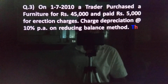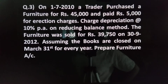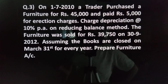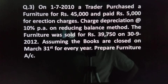Next problem, question number 2. On 1-7-2010 a trader purchased furniture for Rs.45,000 plus erection charges. Reducing balance method — the written down value on the second year debit side is brought down. First year, second year, debit side balance.